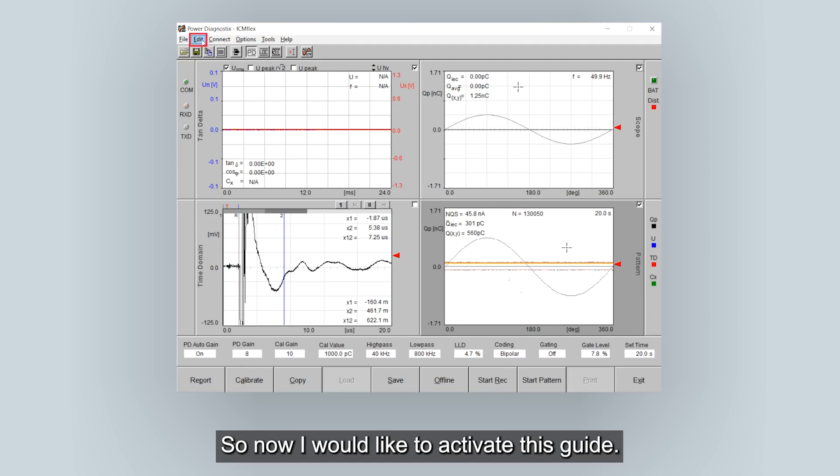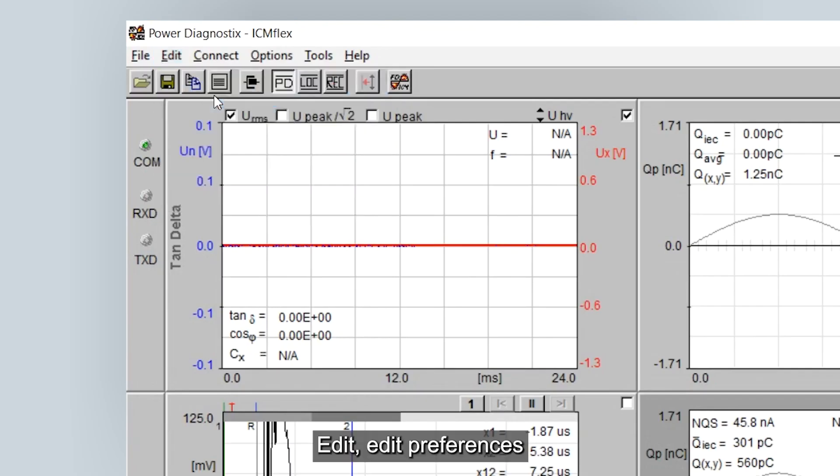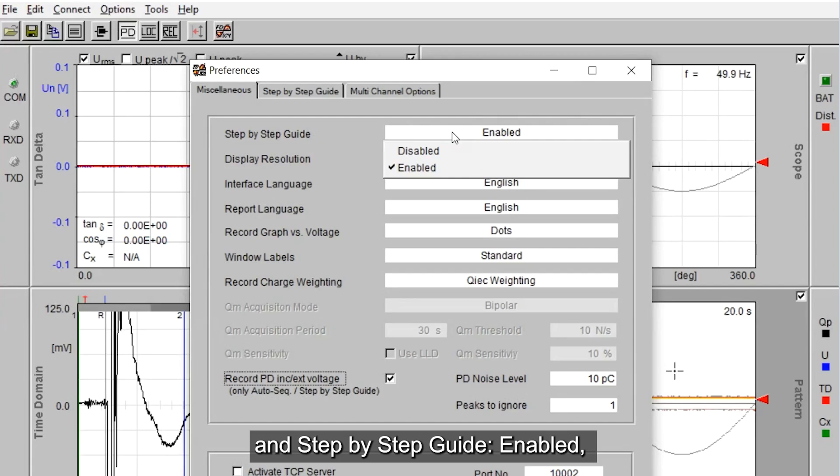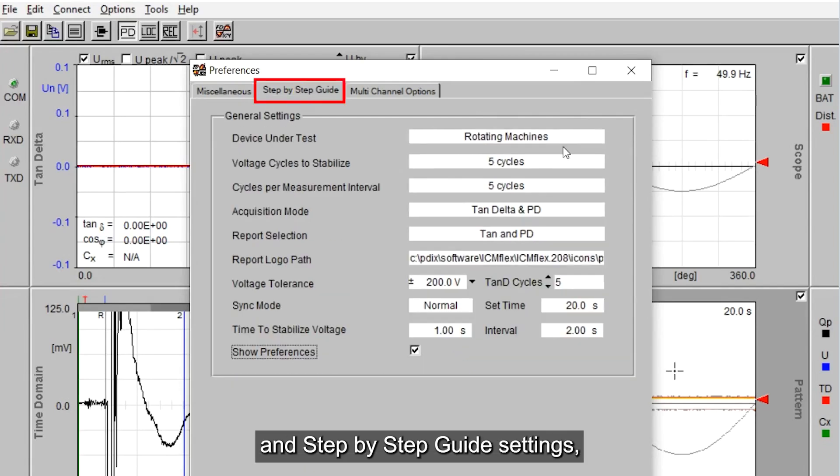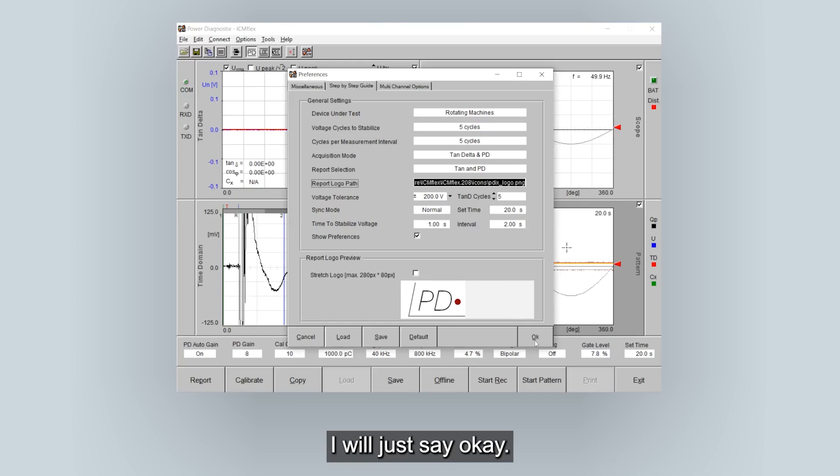So now I would like to activate this guide, edit, edit preferences and step-by-step guide enabled and step-by-step guide settings. So device under test, rotating machines. I will just say okay.